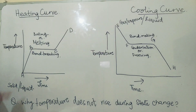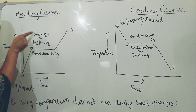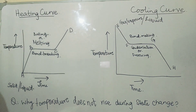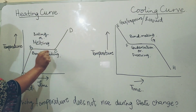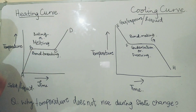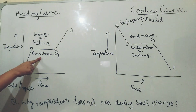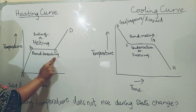Now, what happens from B to C in the heating curve and from F to G in the cooling curve? As you can see on the board, the boiling or melting — which is a state change — occurs from B to C. While this line has become horizontal, the temperature does not change. The reason is all the heat we are providing is used to break the bonding and does not increase the kinetic energy of the particles.